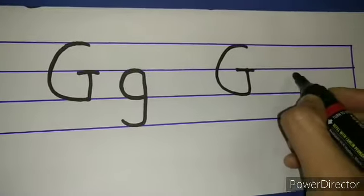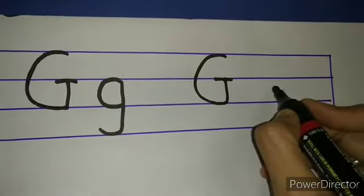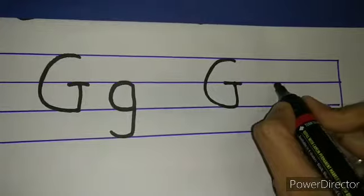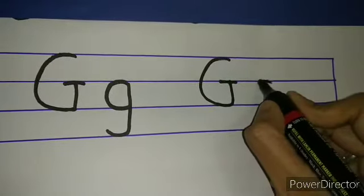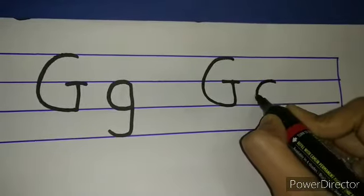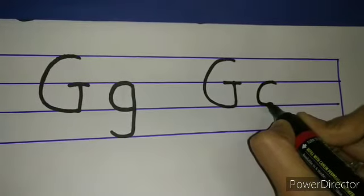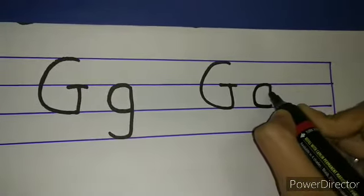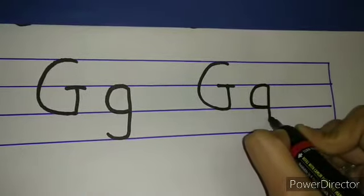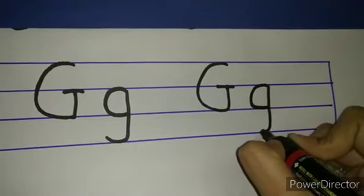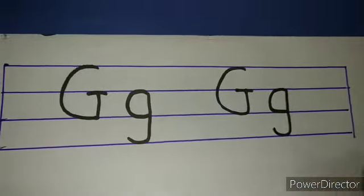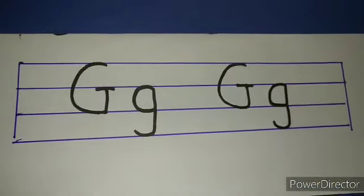Let us write it once again. Make a right open curve. Go up. Standing line. Sleeping line makes G. Now let us write lowercase g. Make a right open curve. From up, come down. Take a turn. Makes g.